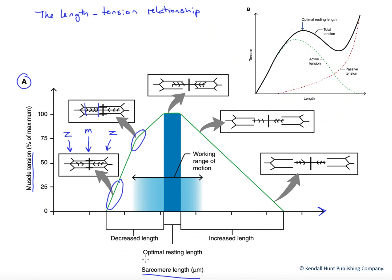And then of course, there's an optimal resting length where we get ideal overlap between thick and thin filaments. We have room to slide into this towards the Z-disc, and we're going to get our best tension development in this range of length.